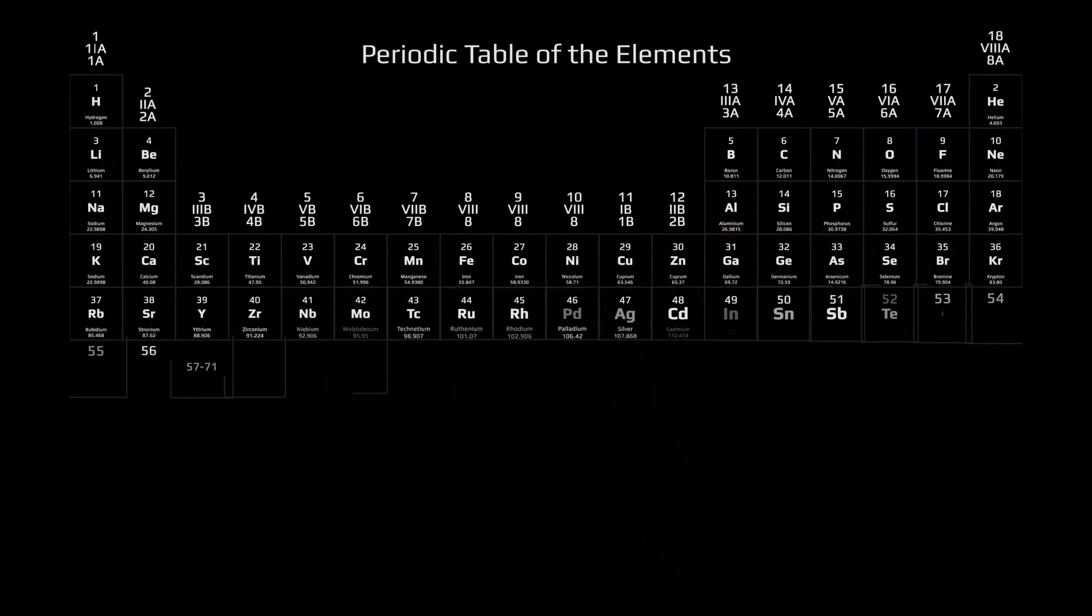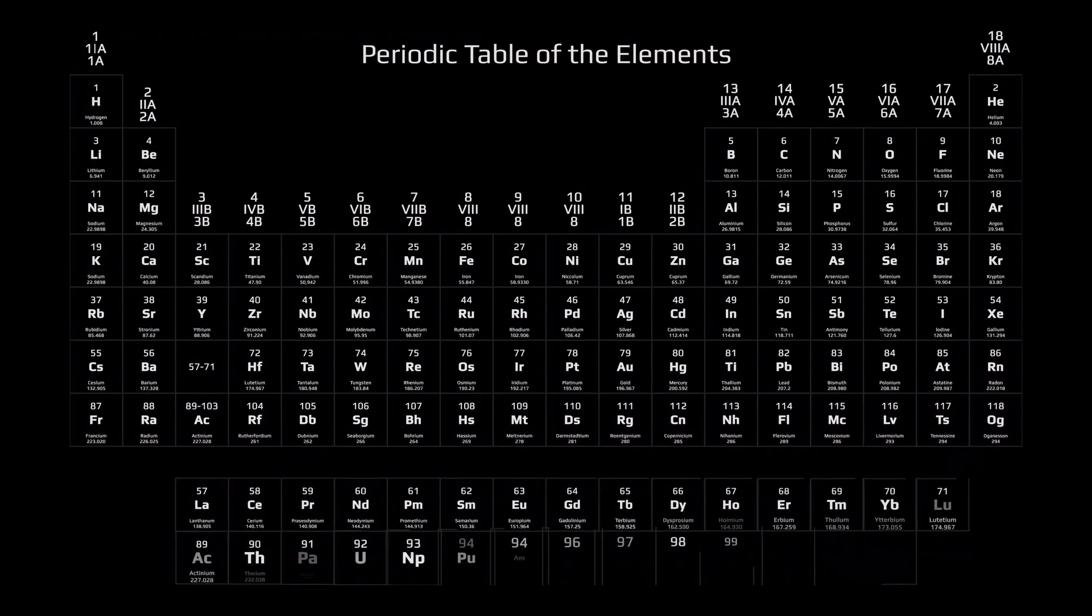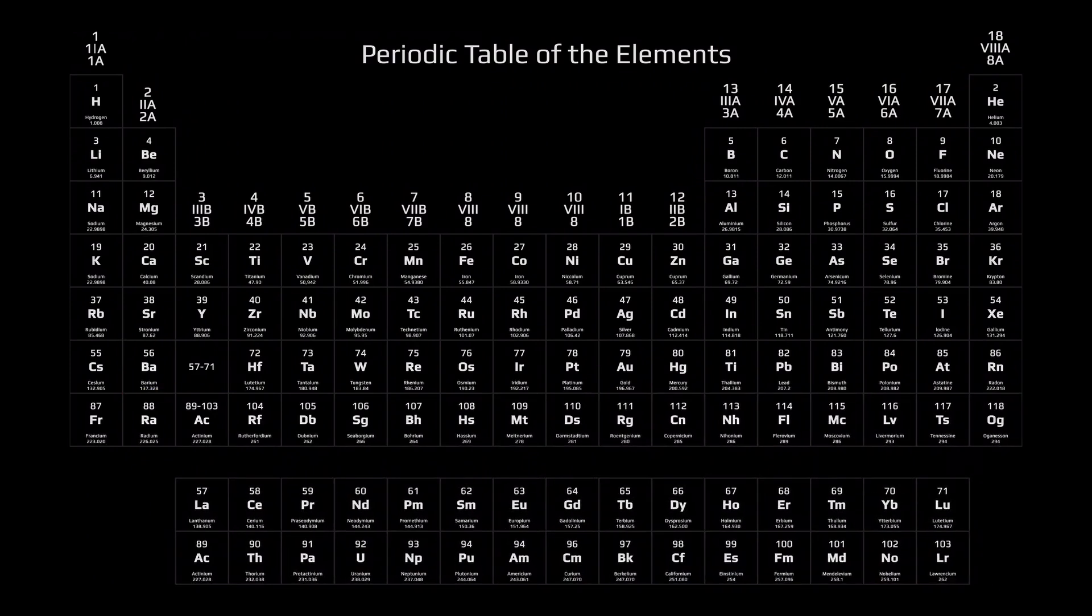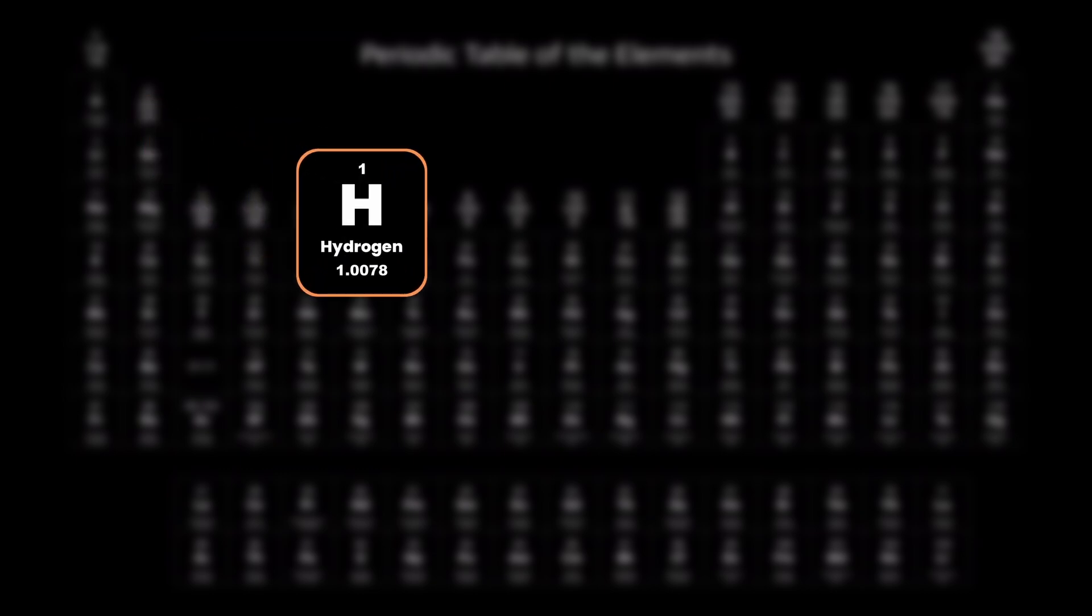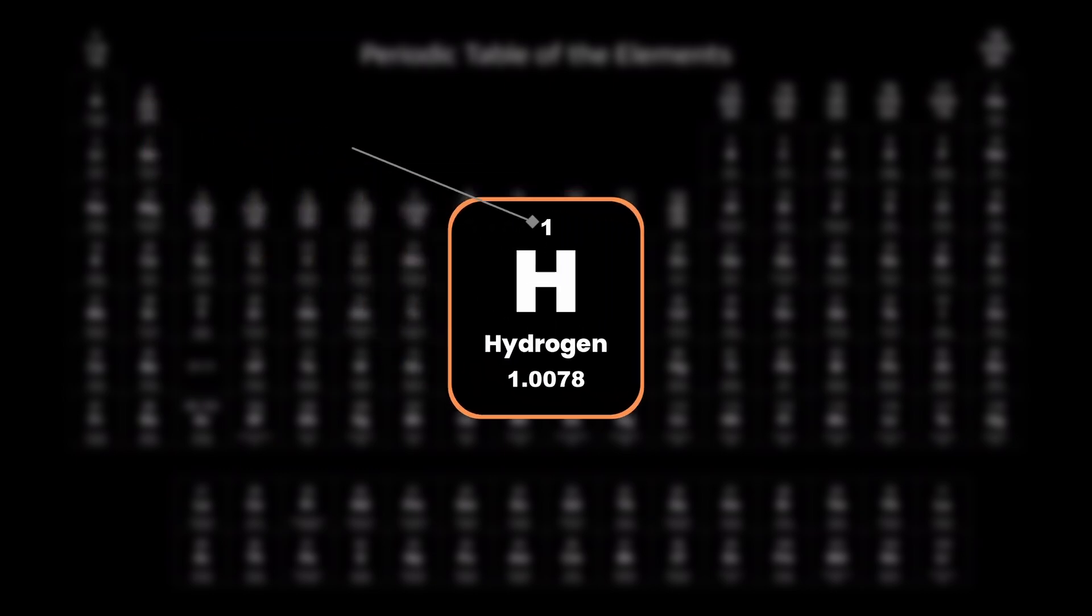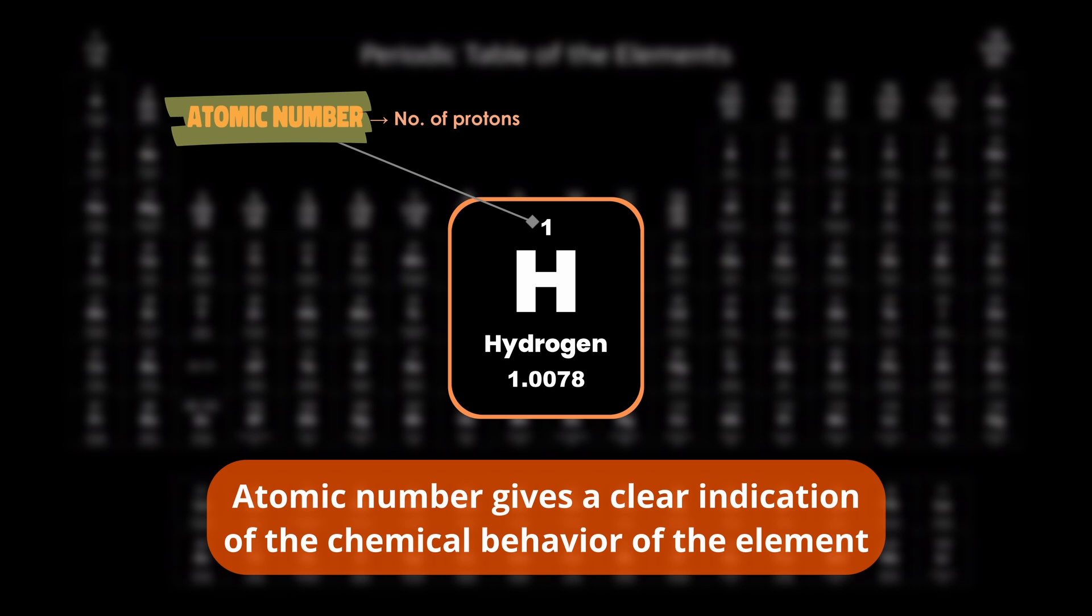Now, the periodic table can be read in a number of ways, providing a great deal of information about a particular element or group of elements. The first and most crucial aspect one can infer from the periodic table is an element's atomic number. The number of protons in an atom is referred to as the atomic number. It also gives a clear indication of the chemical behavior of the element.